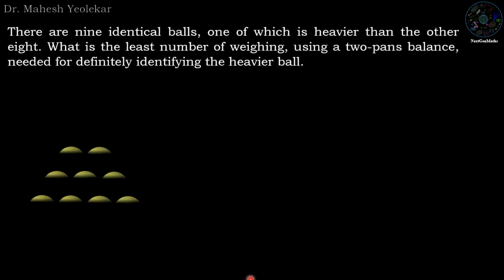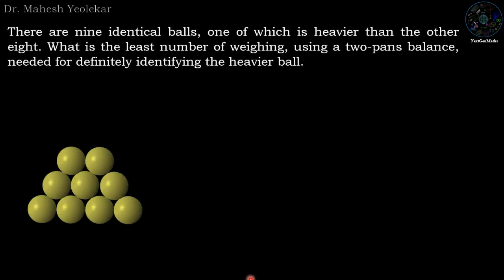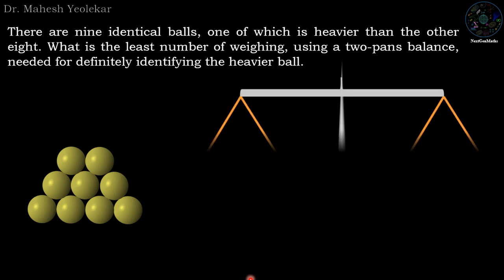There are nine identical balls, one of which is heavier than the other eight. What is the least number of weighings using a two-pan balance needed for definitely identifying the heavier ball?